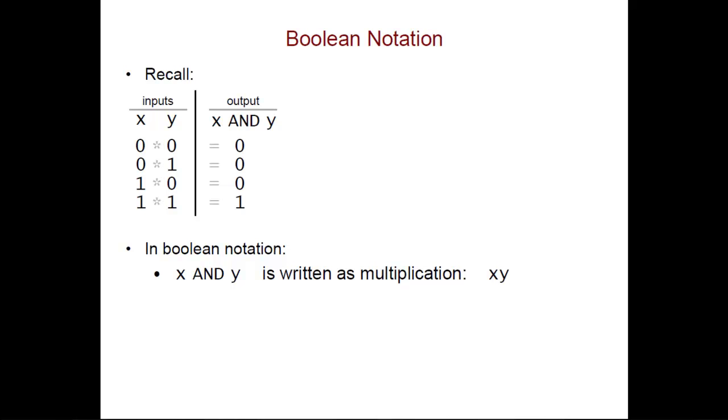The truth table for OR looks like this. The output of the two inputs x and y is just the sum of x and y. So when we write x OR y, we will often do so using an addition symbol.